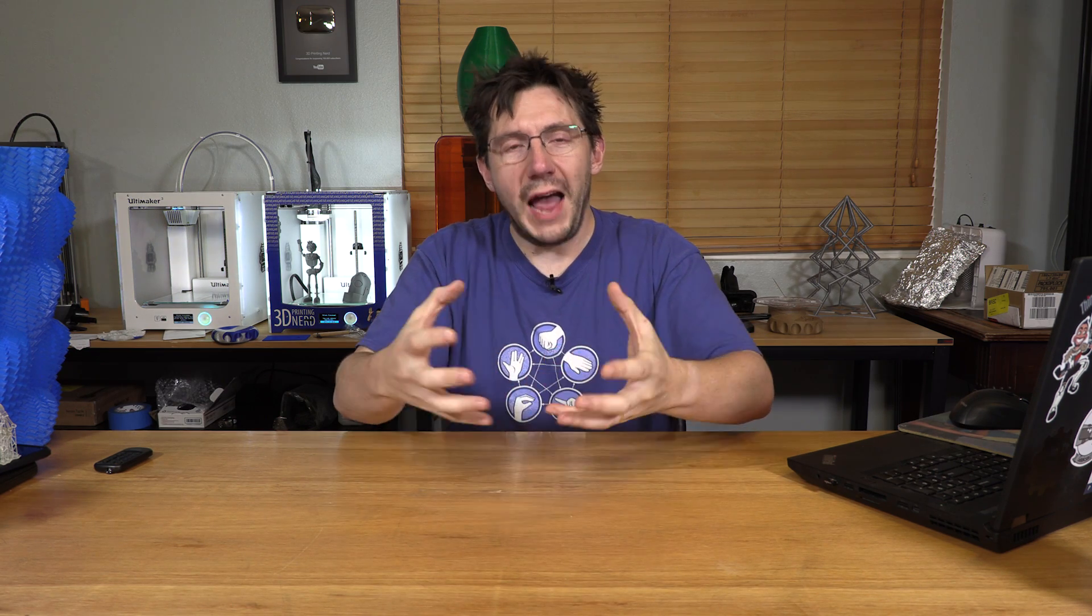In order to show you what I believe to be the most exquisite model I've printed to date, we need to talk about that machine right there. No, not the green thing on top of it, the machine. That is the Form 2 from Formlabs. It's a resin printer. It uses SLA to create these tiny minuscule layers within a vat of resin that it then pulls the part out of.